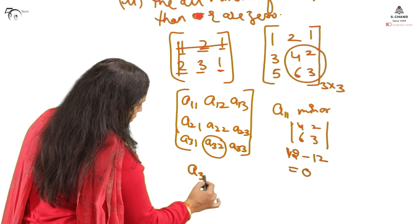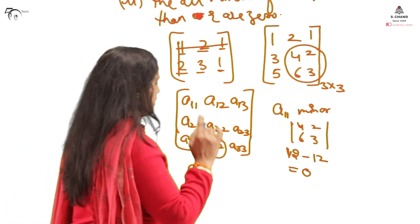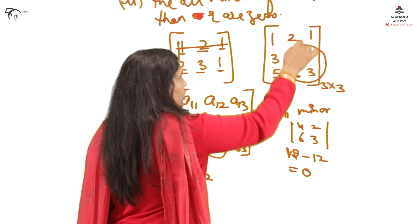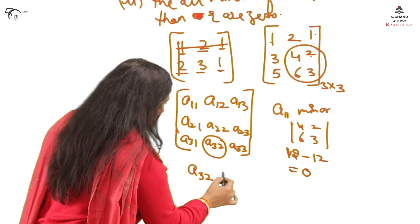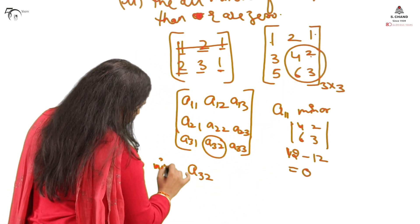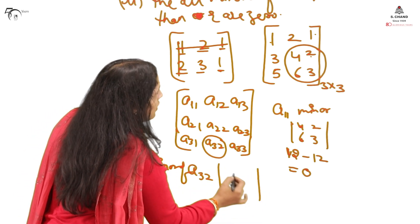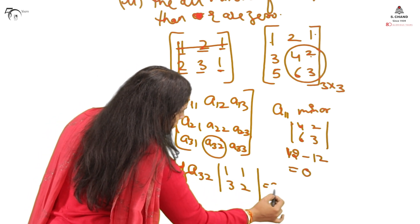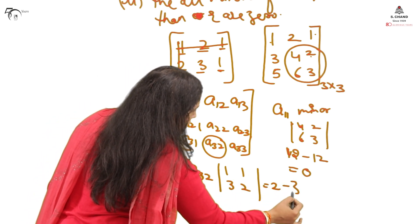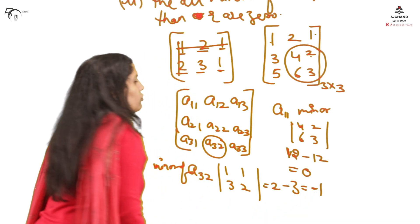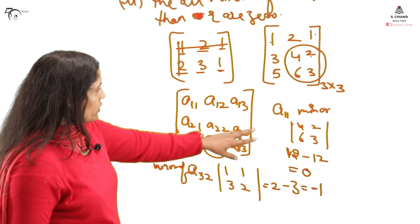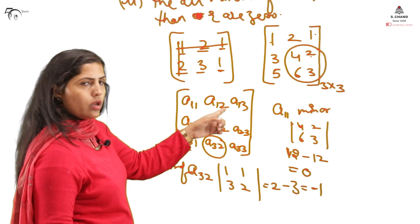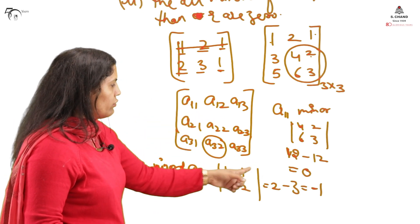One more minor — suppose you are finding the minor of element a32. A32 means the third row, second element. So you leave the third row and second column. Removing those gives you the elements: 1, 2, 1, 3. So the minor of a32 is the determinant of that 2x2 matrix: 1 into 2 minus 3 into 1. This is how you write any element's minor. Similarly, for the minor of a12, you leave the first row and second column, then use the rest of the elements.